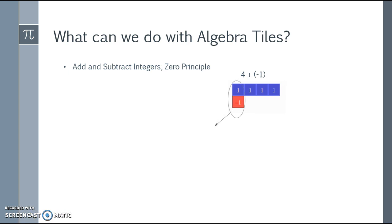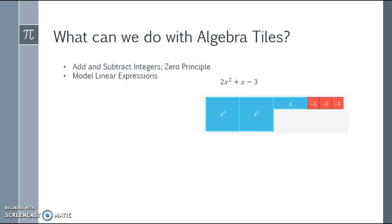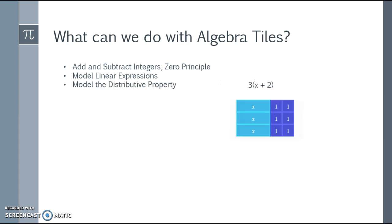I also can model linear expressions. Here we see we have two x squareds plus an x minus three units. I can model the distributive property. Here I have three copies of x plus two—here's one copy, two copies, three copies—leading me that all in all I have three x's and six units.